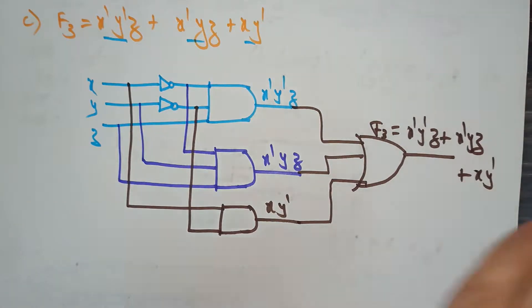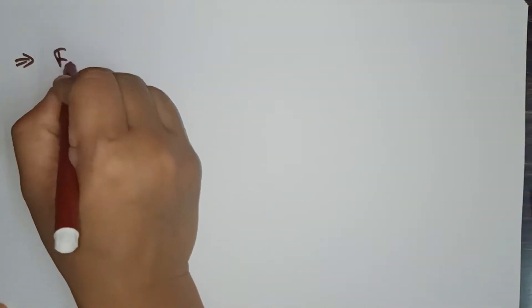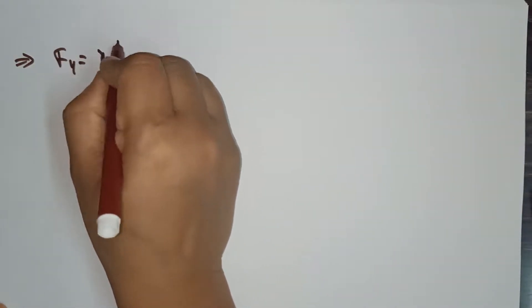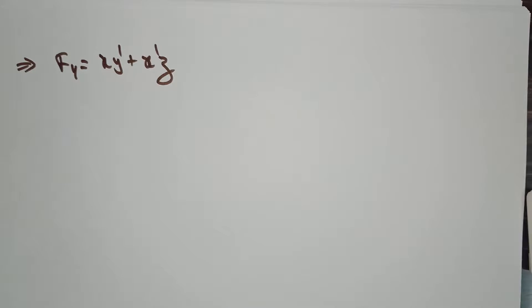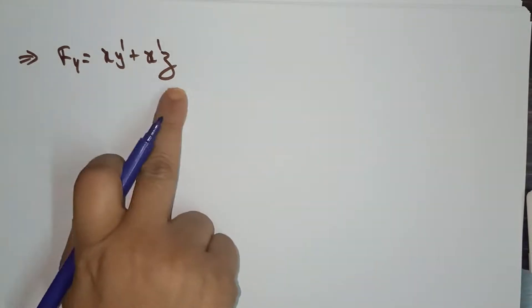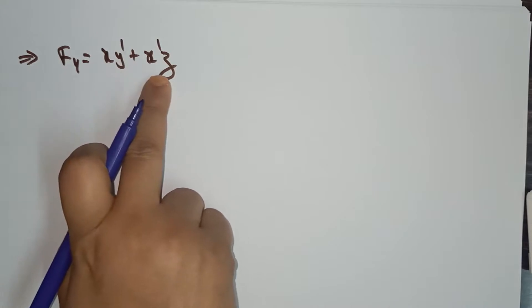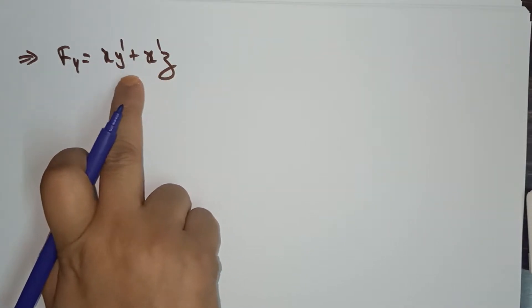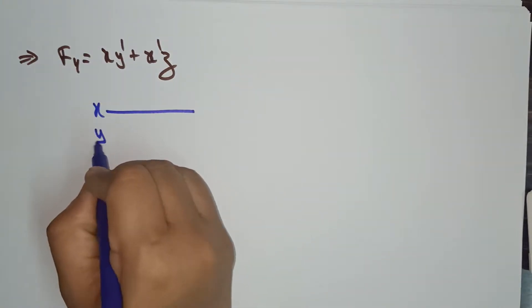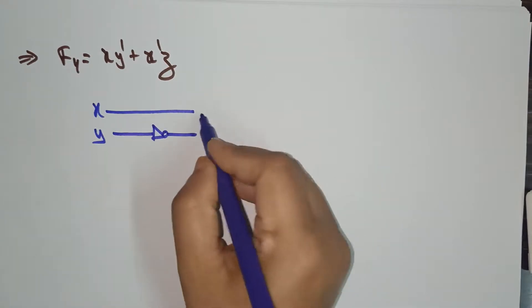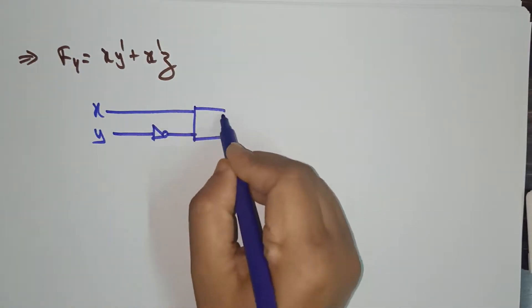Now let's look at one more example. F4 = xy' + x'z. First, observe how many gates are here: there are two AND gates. This is one AND gate and this is another AND gate, and these two AND gates need to be connected with an OR gate. So first connect x and y' — y' is the complement of y — to one AND gate.